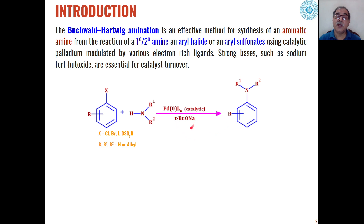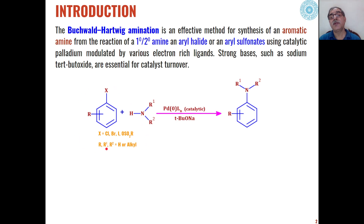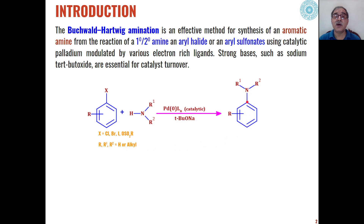In addition to palladium catalyst, we need to use strong bases like sodium tert-butoxide. The difference from other coupling reactions is that in previous lectures we discussed the formation of carbon-carbon bonds, whereas here Buchwald-Hartwig amination involves the formation of a carbon-nitrogen bond through these types of coupling reactions.